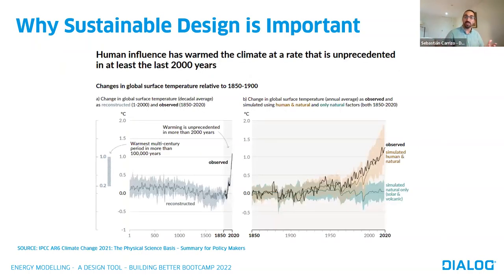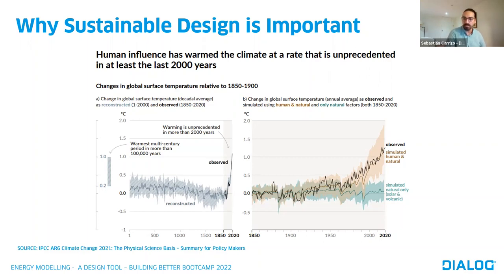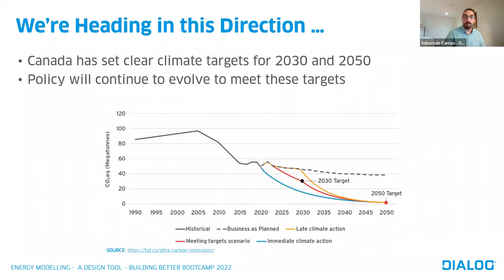This is not secret, and I think this group agrees: human influence has really warmed the climate at an unprecedented rate. We're expecting global surface temperatures to continue increasing. Global warming of 1.5 and 2 degrees will be exceeded during the 21st century unless we do deep reductions in our carbon dioxide emissions in the upcoming years.